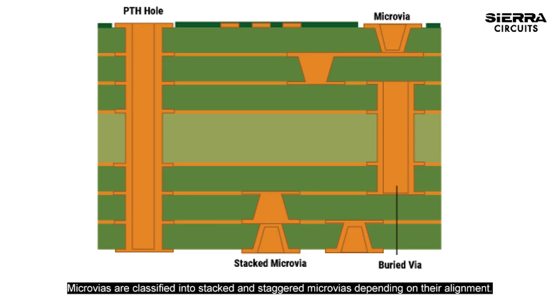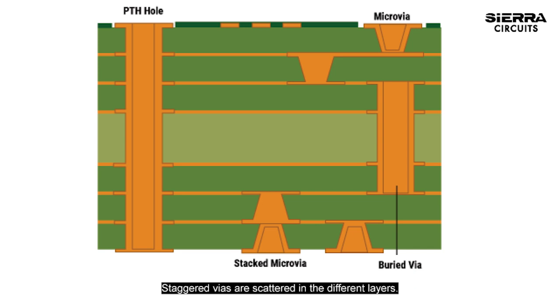Microvias are classified into stacked and staggered microvias, depending on their alignment. Stacked vias are piled on top of one another in different layers, while staggered vias are scattered across the different layers.